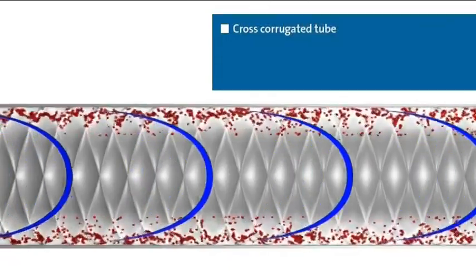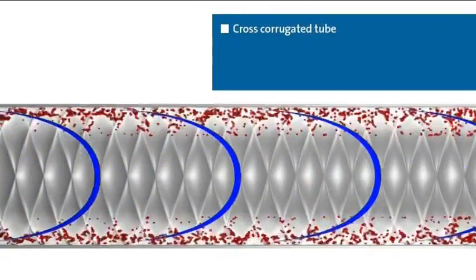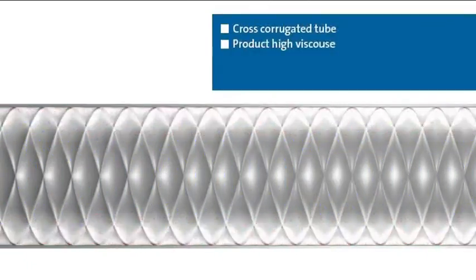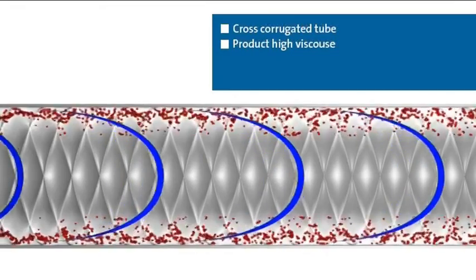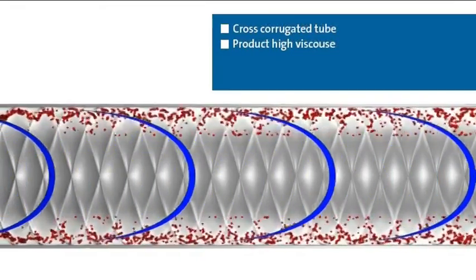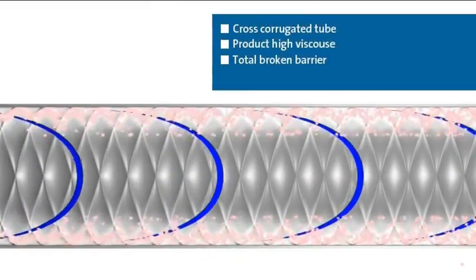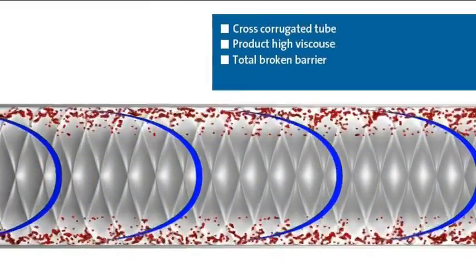Now the same function in a cross-corrugated tube. The product is once again high-viscous. The laminar layer at the edge of the tube is very comprehensive. Despite the low turbulence flow, very good heat transfer is achieved.